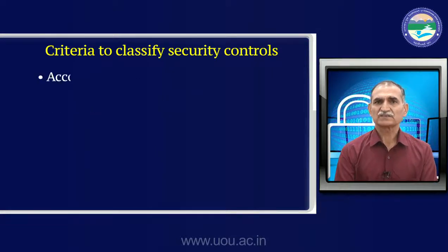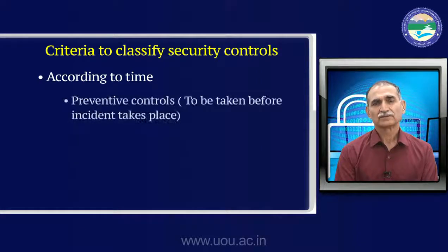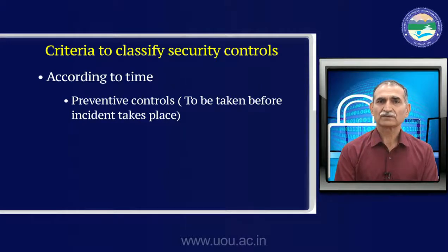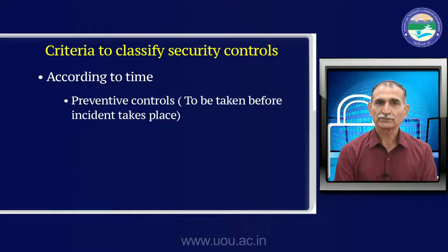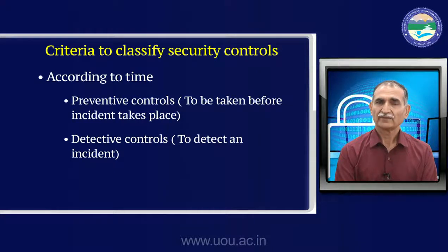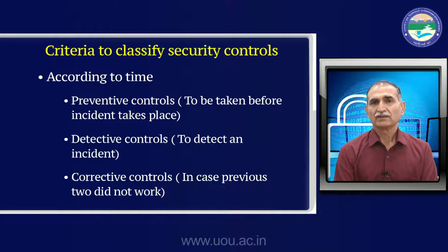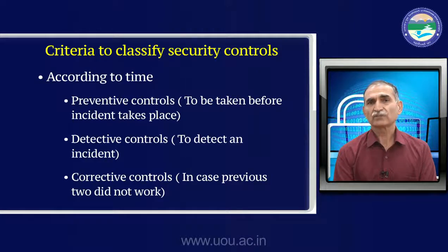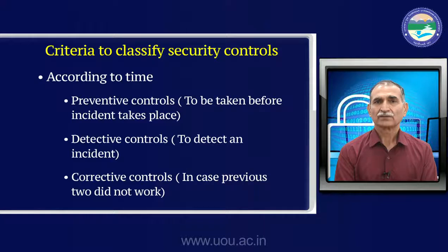On a time basis, what kinds of security controls are there? One is preventive controls — prevention is always better than cure, so we take measures to mitigate all threats. We can also detect issues. If there are problems, we need to detect them and take action. Corrective controls help us — after the problem is detected, with the help of corrective controls we are able to restore the system back.